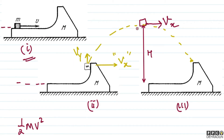Capital M's potential energy never changes, so we don't need to include it. Therefore, the total initial mechanical energy of the system is ½mv². Now, applying energy conservation, we write this equal to the energy expression for the later situation. We need to look at situation 3 — where small m lands back on capital M at the same position.